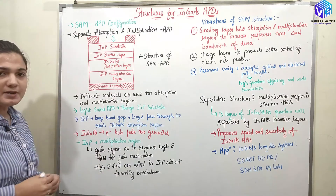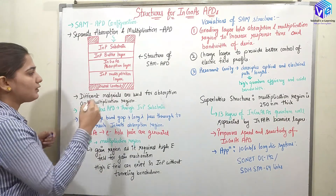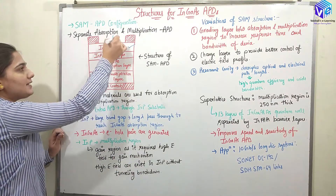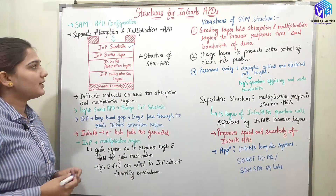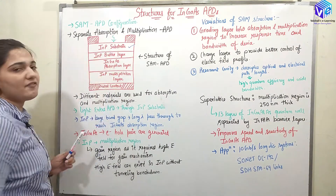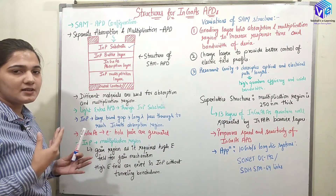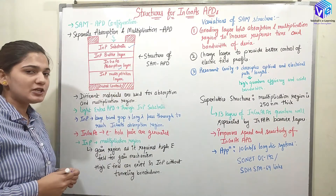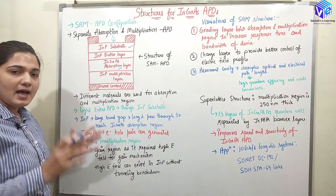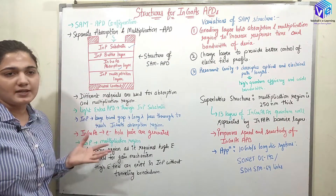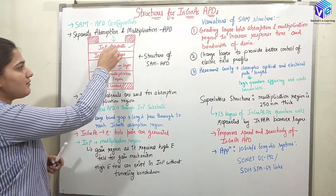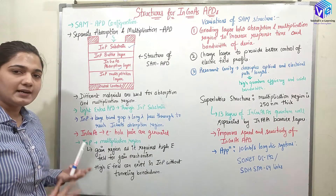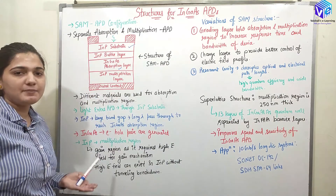This is the structure of the SAM APD. Here we have the metal contact and at the upper end we have the indium phosphide substrate. The light is falling on the indium phosphide substrate, below which we have the indium phosphide buffer layer. After that we have the absorption layer, which is of indium gallium arsenide, and then we have the multiplication layer which is of indium phosphide. So the layers are: indium phosphide, indium phosphide buffer, indium gallium arsenide, then again indium phosphide.